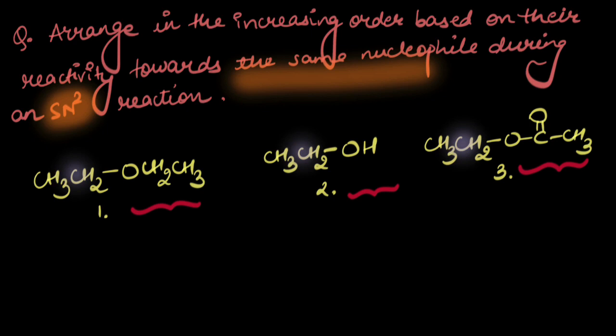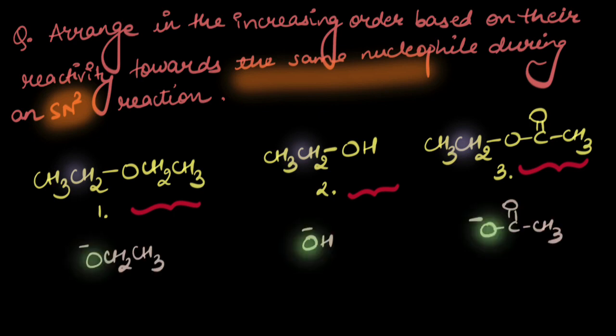Let's think about which of the three leaving groups is the most stable. In each case, the negative charge resides on the oxygen atom — the same atom — so we use electronic effects. In the first case, the ethyl group attached to the oxygen atom donates electron density via the +I effect. The oxygen already has a negative charge and is electron dense, so pushing more electron density onto it makes it unstable.